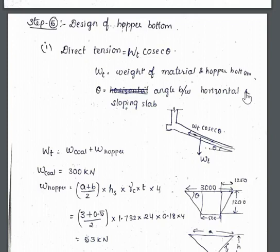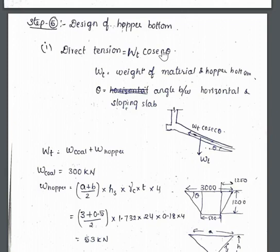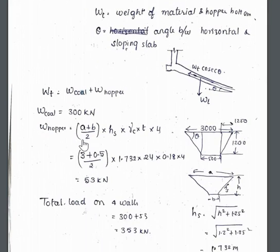Let us now continue with the design of the square bunker. From Step 5 we have to continue with the design of the hopper bottom. First, we have to find out the direct tension, which is Wt cosec theta. Theta is assumed as 45 degrees. Wt is the weight of the material plus the self-weight of the hopper bottom.